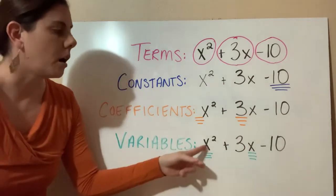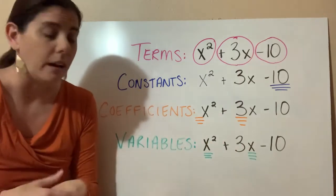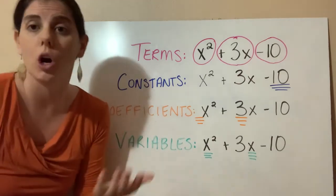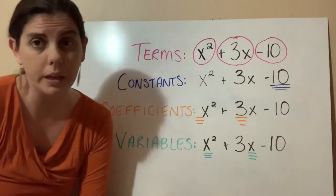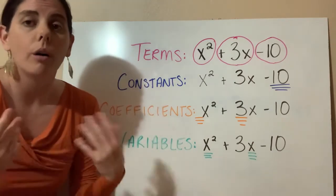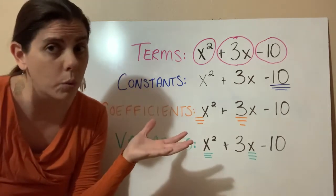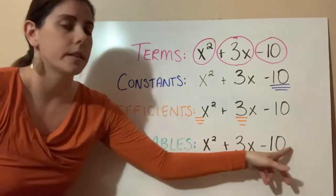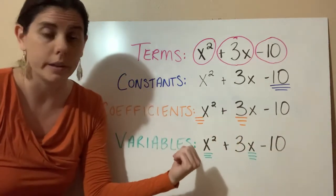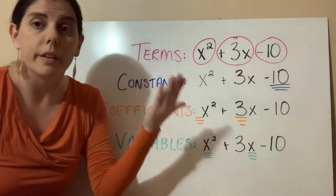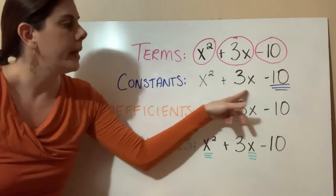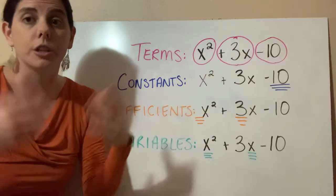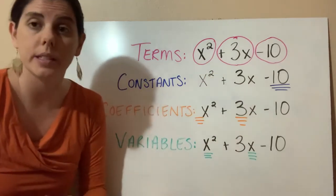Our variables are the x's. In algebra, you could see any letter — x, y, z, a, b, c, l, m, n — all kinds of different letters, and that's okay. All a variable represents is some number we don't know what it is, but it represents some number. If we were to set this equal to something, then we could find out what it is. One of the things to look forward to in math 2 is being able to factor or simplify this expression and actually solve it.